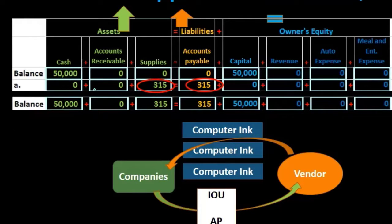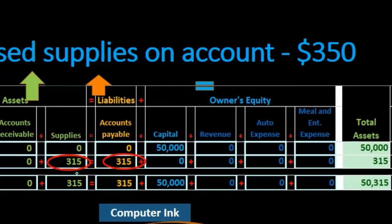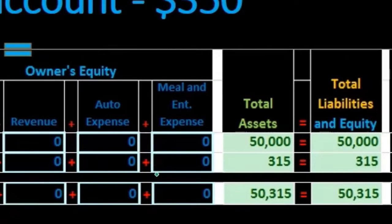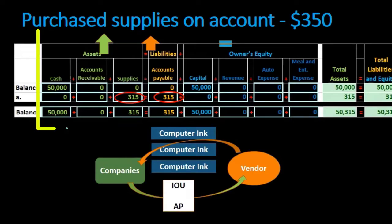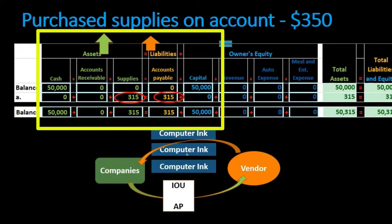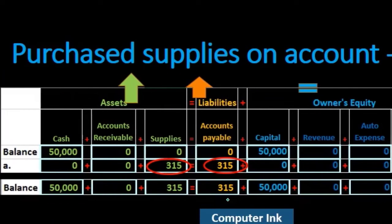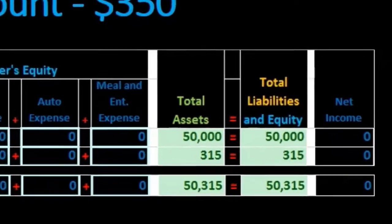Accounts receivable was zero and remains zero. Supplies were zero; adding $315 brings them to $315. Accounts payable was zero; adding $315 brings it to $315. Capital was $50,000; adding zero keeps it at $50,000. Revenue and expenses are all zero. Total assets are cash $50,000 plus supplies $315 for $50,315, equaling liabilities of $315 plus capital of $50,000 for $50,315.